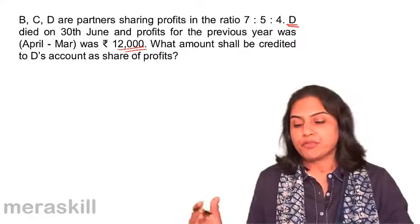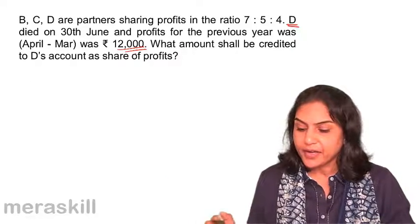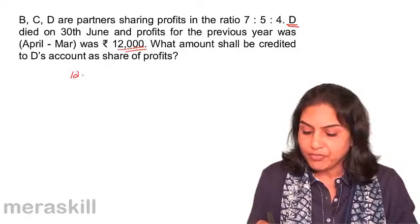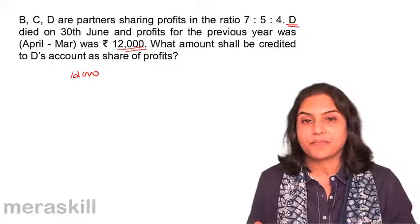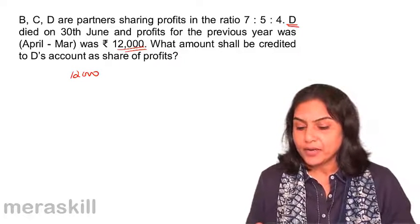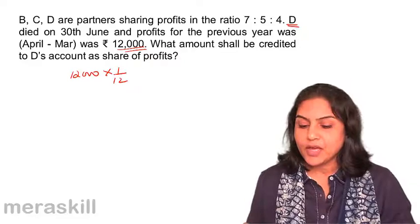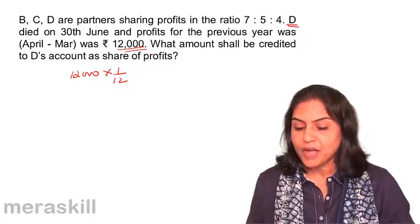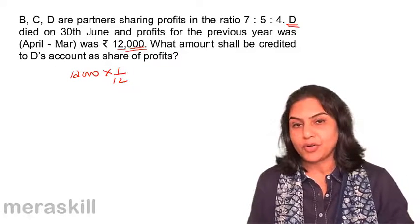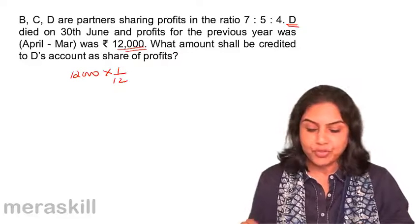Assuming that the same profits would be earned in the current year, we would take 12,000 as the profit for one year. Therefore, 1,000 is the profit for one month. And after March we are talking about April, May and June for 3 months.